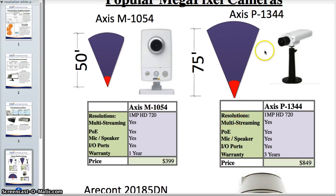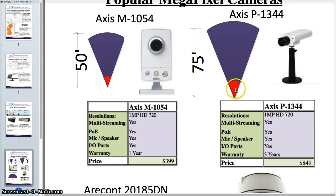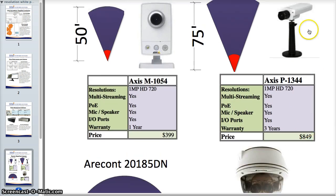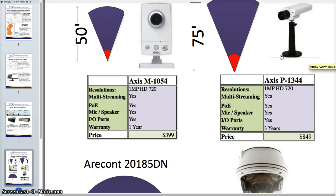The next one is the Axis 1344. Just keep in mind the ratio of space and how far you can get — the red area represents identification and the blue is recognition. One of the great things about the 1344 is it has interchangeable lenses, so if you really need to capture a license plate or see a door clearly, this camera has a fixed field of view that can be changed. It's very powerful, not too expensive at only $849, and you can easily include an outdoor enclosure for about $200 extra to make it an outdoor-ready camera.